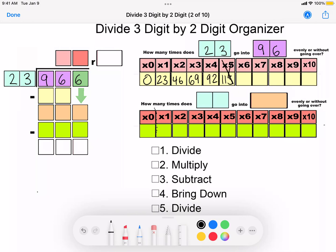Circle four on top, 92 on the bottom, subtract and you get four. Now bring down.